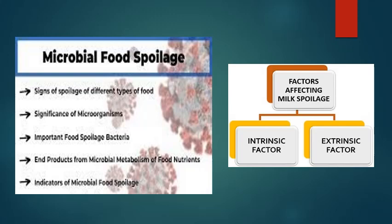There are also factors affecting spoilage of milk: intrinsic factors such as pH, oxidation-reduction potential, nutrient content, and presence of natural antimicrobial agents; and extrinsic factors such as storage temperature, relative humidity, and other environmental conditions, all of which play a very important role in the spoilage of milk.